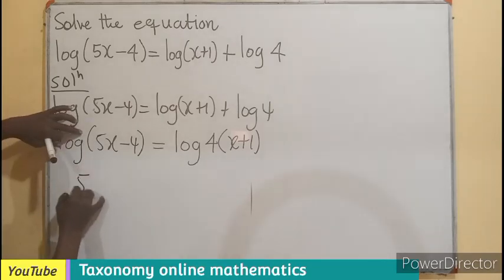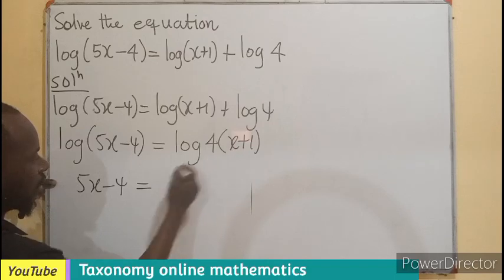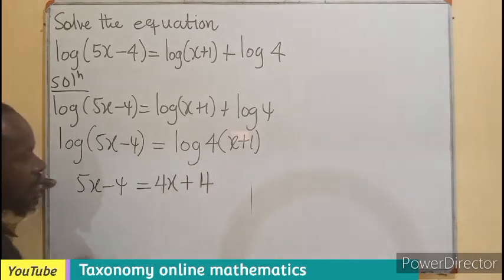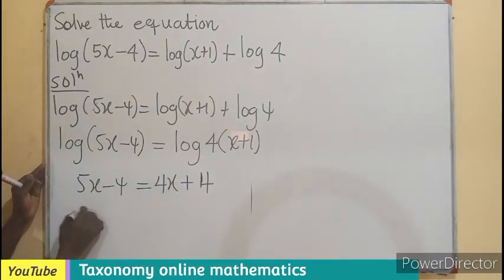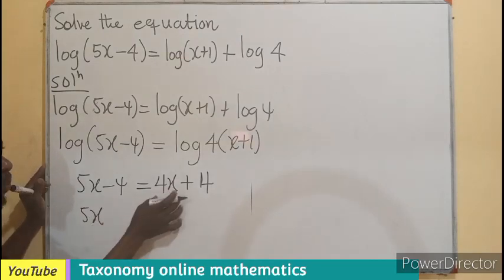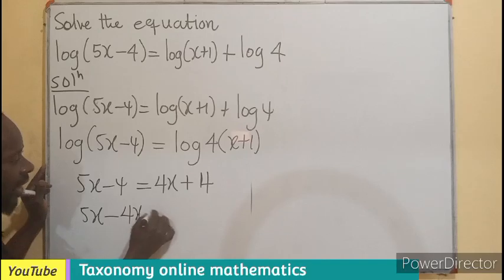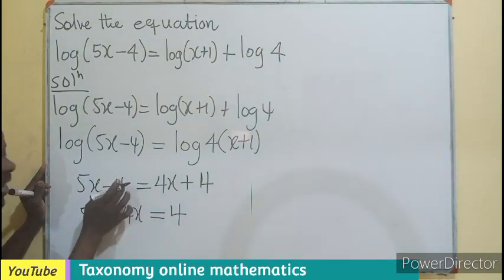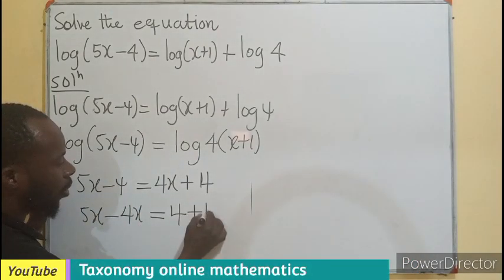So you will be left with only 5x-4 equals to 4x+4. So we can group like terms with the x together. So 5x minus 4x equals to 4 plus 4, as we are having here, the negative 4 transpose to become positive 4.